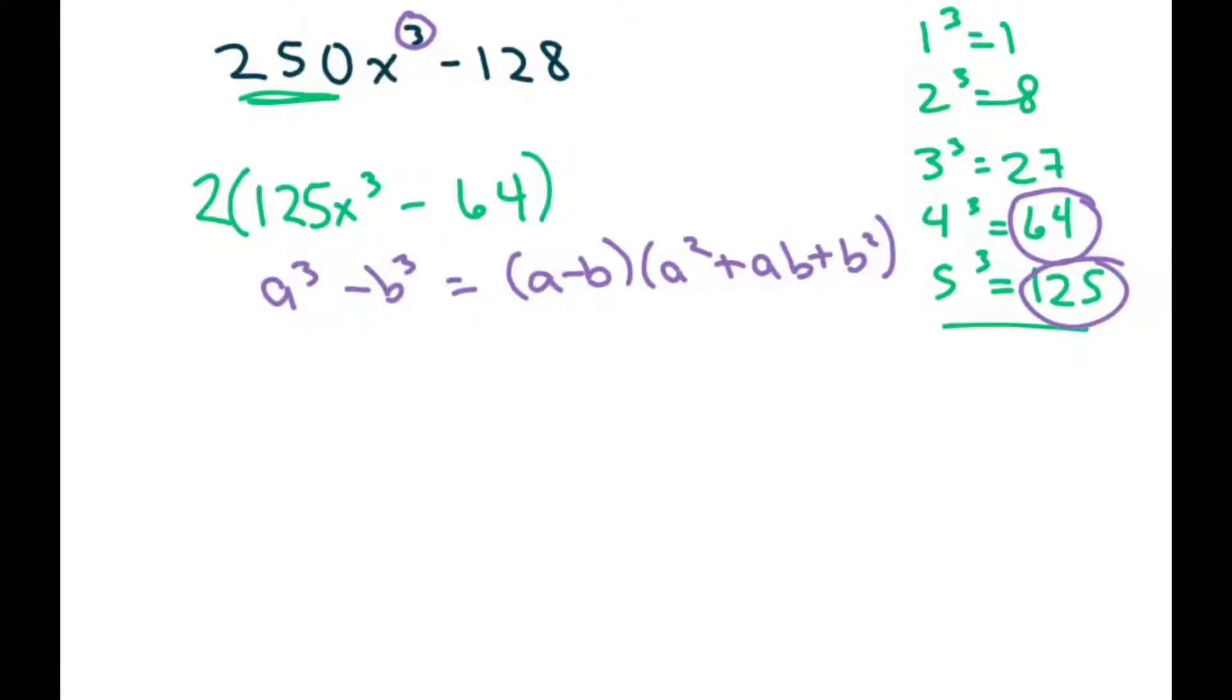All right, so, and don't forget we have this 2 out here. So just looking at this piece, I'm going to write this as cubed, and so this would be 5x. My a is 5x, and my b therefore would be 4, because 4 cubed is 64. So I have my a and b, and now I just use this formula.